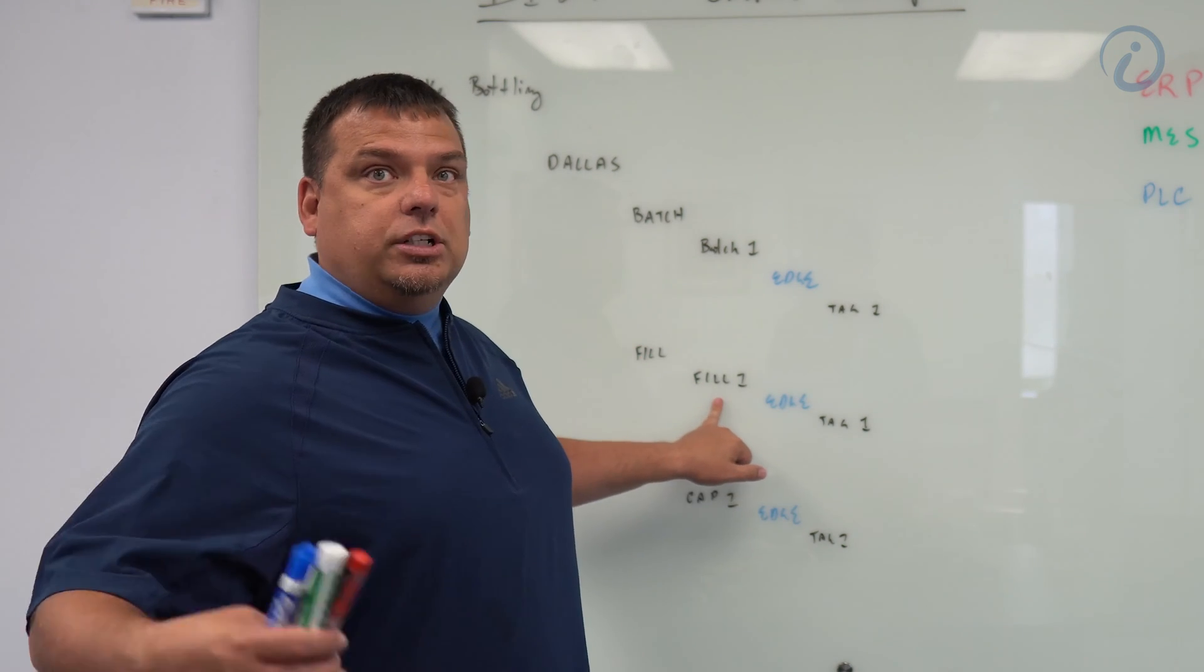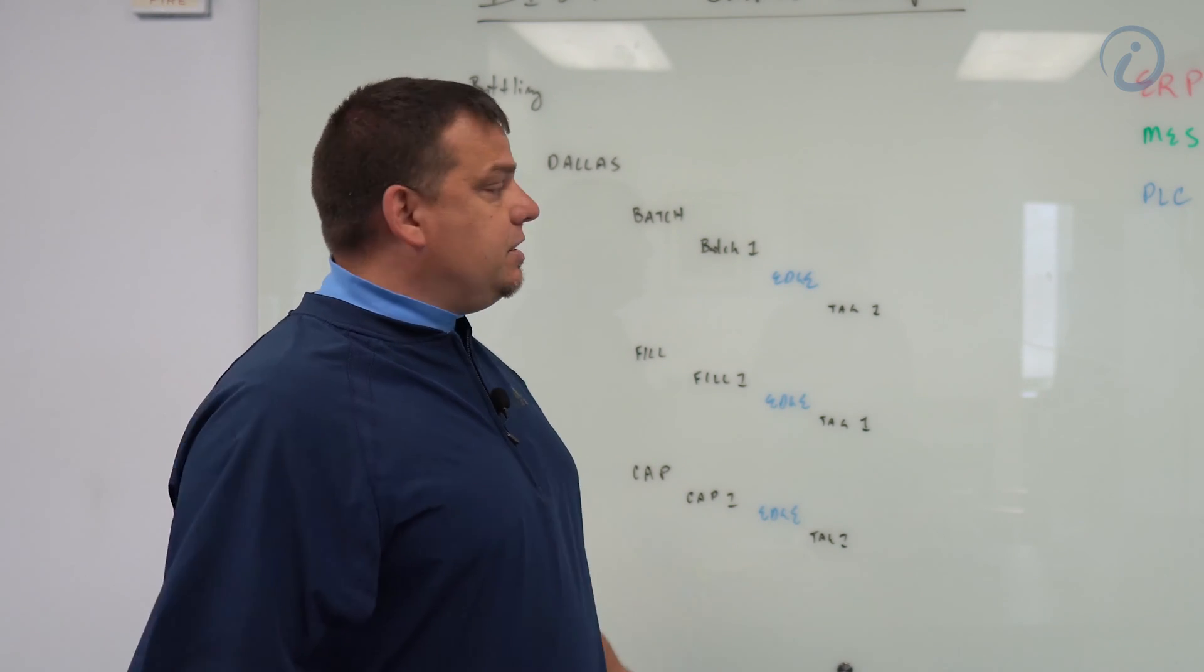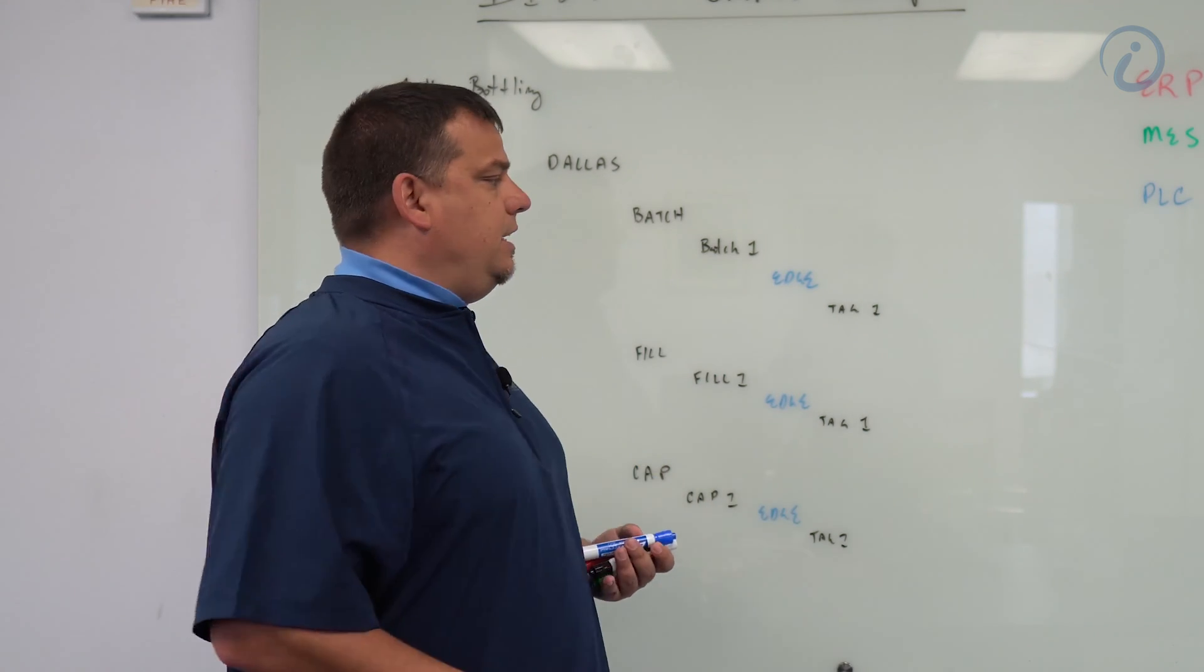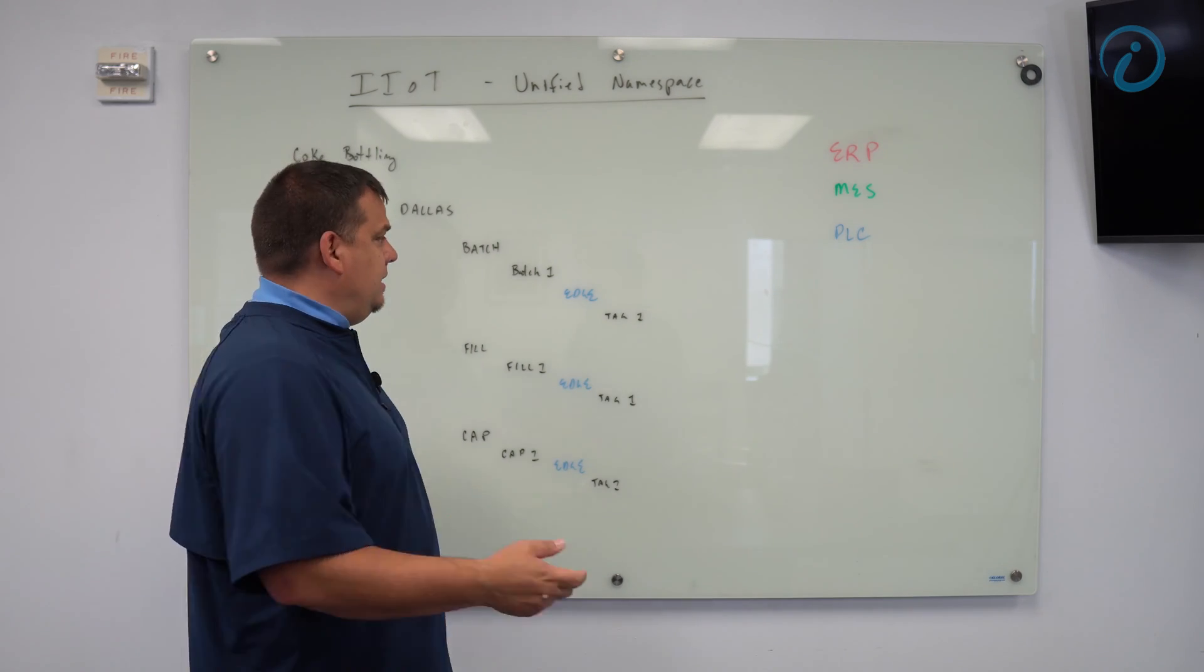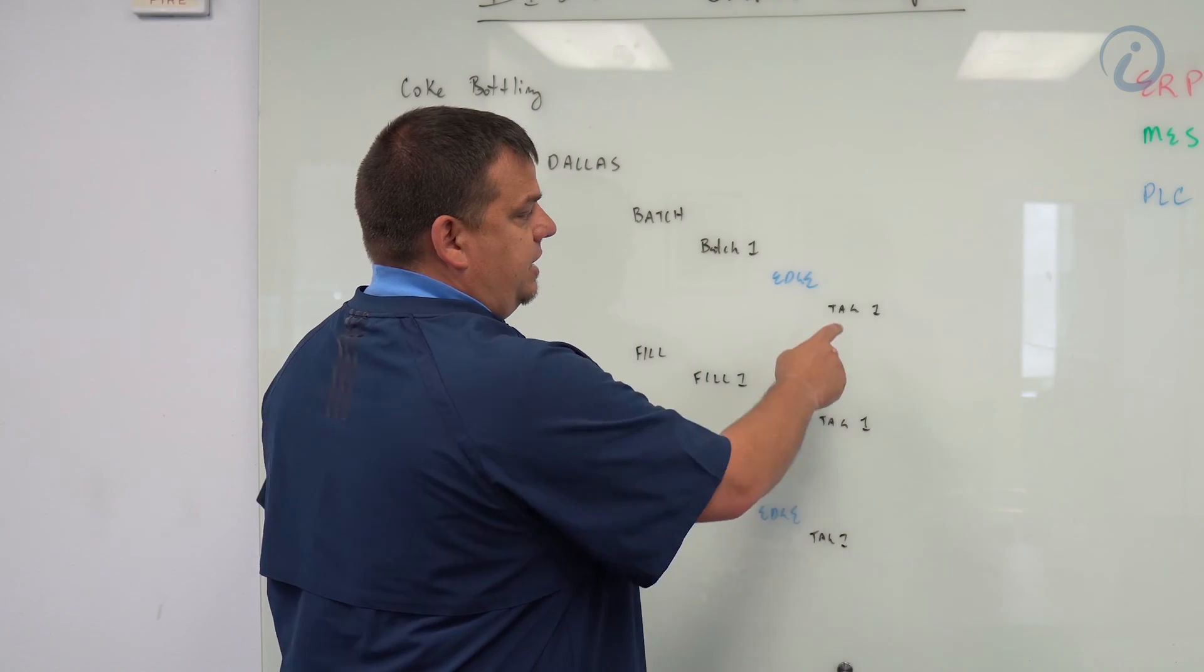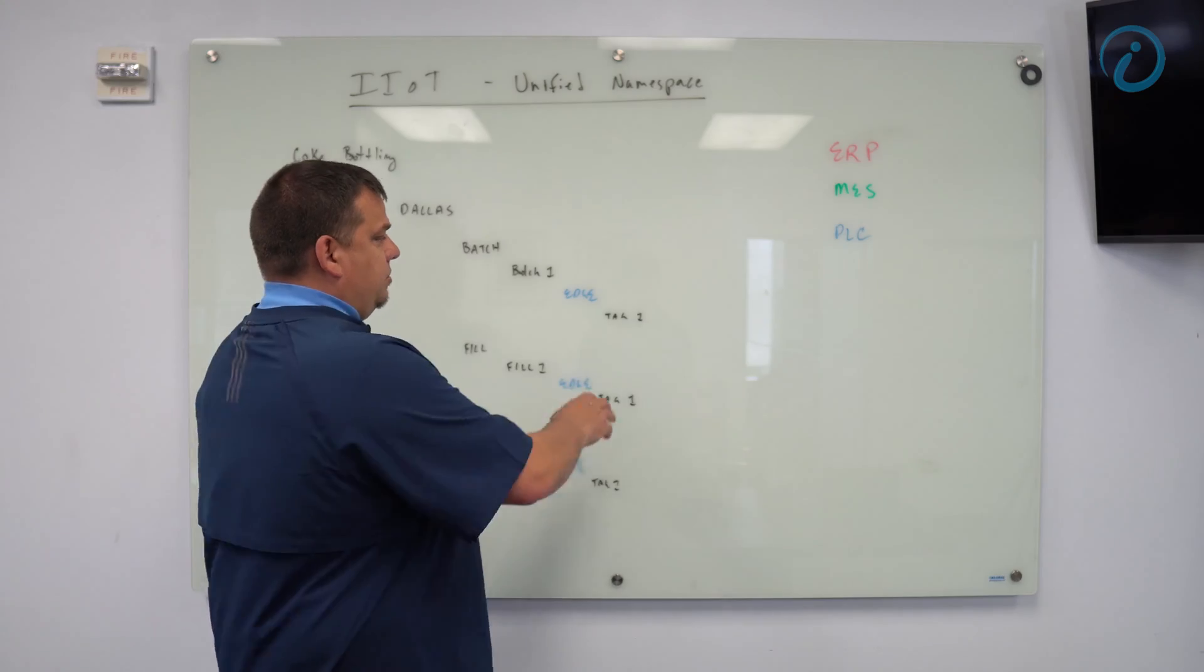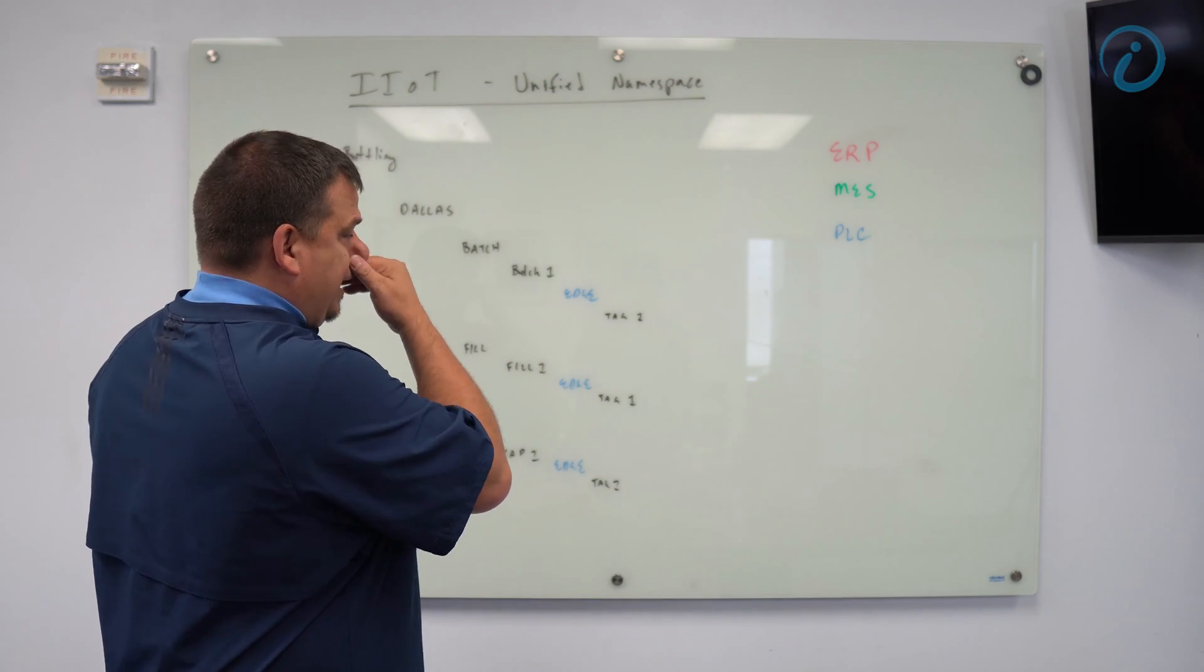Under fill, I have fill 1, 2, 3, 4, 5, 6. Under cap, I have cap 1, 2, 3, 4, 5, 6, 7. And then on the edges, I have an edge directory for every PLC. It may not be called edge. It could be the actual name of the PLC's ID. But I've got a directory called edge or PLC. And then underneath the PLC, I have all the individual process tags. So tag1.value, I may have thousands of tags inside that directory.